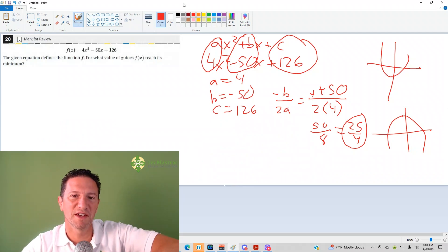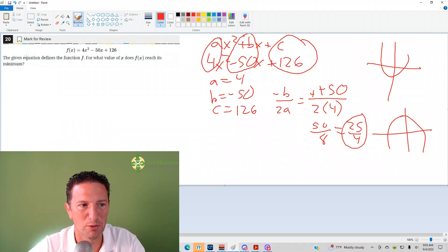This is the 20th question from the Digital SAT Test 1 Module One from the Blue Book app. It says, given the equation defines the function f, for what value of x does f of x reach its minimum?